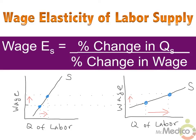Generally, low-skilled jobs such as cashiers have a more elastic wage elasticity of supply than something like brain surgeons. Obviously, it takes more education, training, money, and time to be a brain surgeon than a cashier at a local food store. In the short run, you will not see a large percentage change of brain surgeons when the market salary of brain surgeons changes. The supply curve for brain surgeons in the labor market will be relatively steeper than the supply curve for cashiers in the labor market.